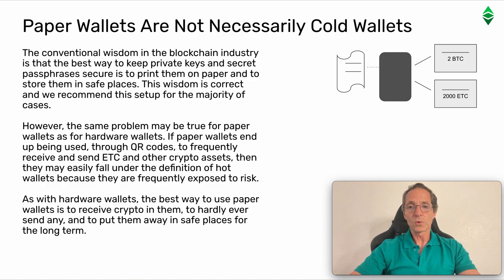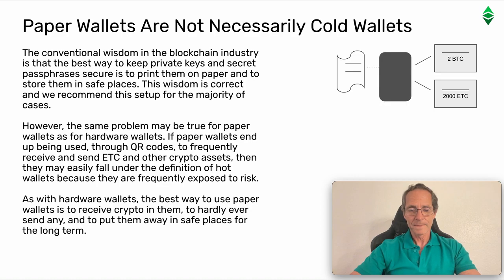Paper Wallets are not necessarily Cold Wallets. The conventional wisdom in the blockchain industry is that the best way to keep private keys and secret passphrases secure is to print them on paper and to store them in safe places. This wisdom is correct and we recommend this setup for the majority of cases. However, the same problem may be true for Paper Wallets as for Hardware Wallets. If Paper Wallets end up being used through QR codes to frequently receive and send ETC and other crypto assets, then they may easily fall under the definition of Hot Wallets because they are frequently exposed to risk. The best way to use Paper Wallets is to receive crypto in them, to hardly ever send any, and to put them away in safe places for the long term.